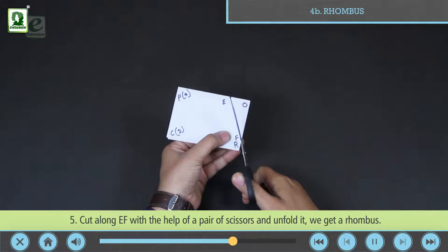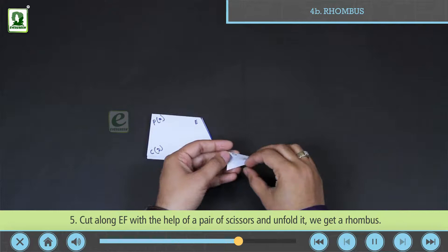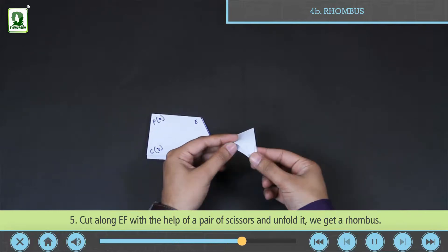Cut along EF with the help of a pair of scissors and unfold it. We get a rhombus.